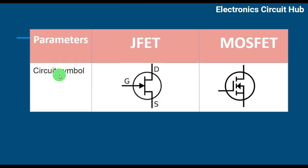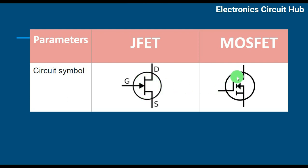Circuit Symbol: you can see the difference between JFET and MOSFET. You can see here the solid line and you can see here the dashed line. This is basically the main difference between the JFET symbol and the MOSFET symbol.